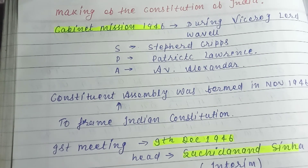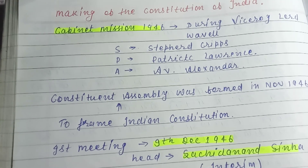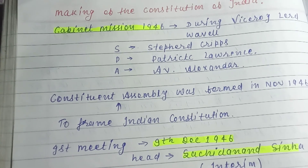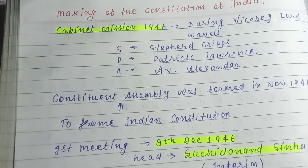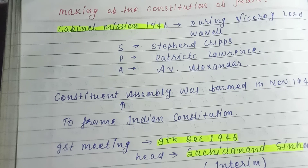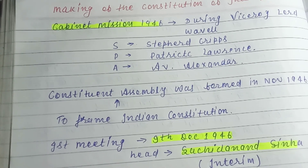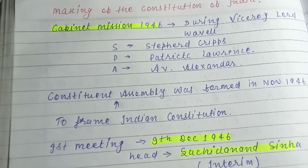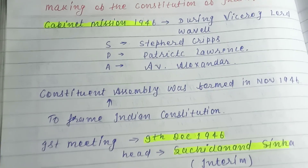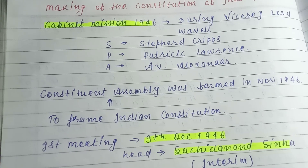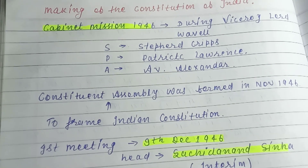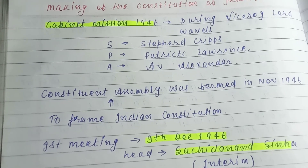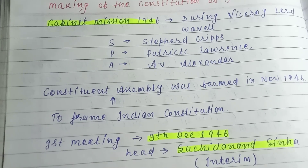Now we will see that the Constituent Assembly was formed in 1946, and the reason it was formed was to frame the Indian Constitution.